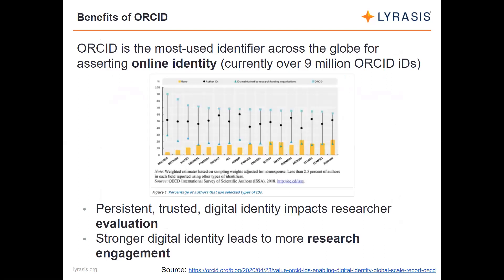More researchers across various disciplines all over the globe are using their ORCID ID to assert their online identity more than any other type of identifier. A chart illustrates that about 70% of researchers across various disciplines worldwide are using their ORCID ID to distinguish themselves. The blue square represents ORCID ID; the horizontal axis shows different disciplines surveyed; the vertical axis shows adoption around 70%. ORCID is really leading the way compared to other types of identifiers.